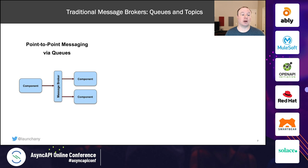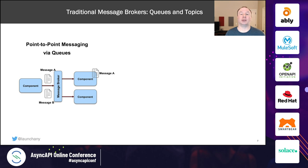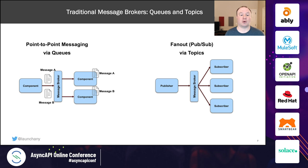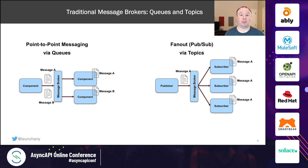We have two key concepts from that world in our async APIs. The first are queues — point-to-point messages where a component sends a message to the broker and the broker decides which component receives it. Compare that to topics, or the fan-out pub/sub pattern, where a message from a publisher gets sent to the broker and the broker sends it to every subscriber that's interested, so everyone gets a copy. Queues allow once-and-only-once delivery; topics allow broadcasting to any number of subscribers.